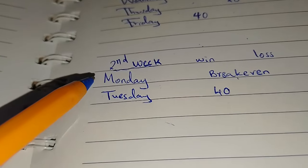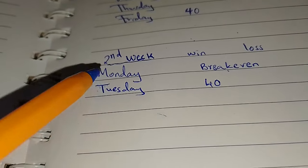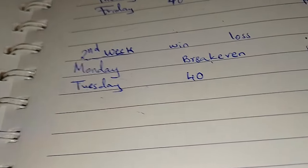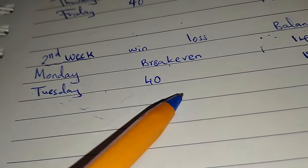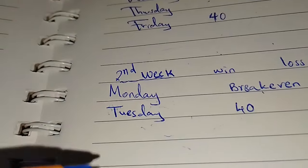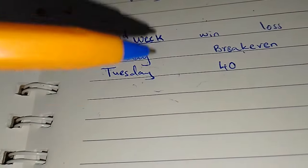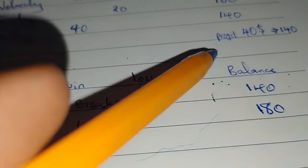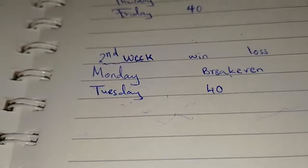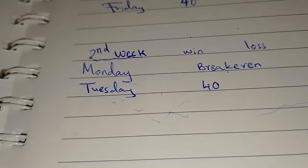For those following along - we are in the second week of the challenge, heading into the fourth week. On Monday I went break even, on Tuesday I made a $40 profit bringing the account to $180, as you've seen. This was from the gold sell trade. I'm hoping to close this week with a profit as well - we closed last week with over $40 profit. We keep grinding and be sure to subscribe if you like this content. Peace out.